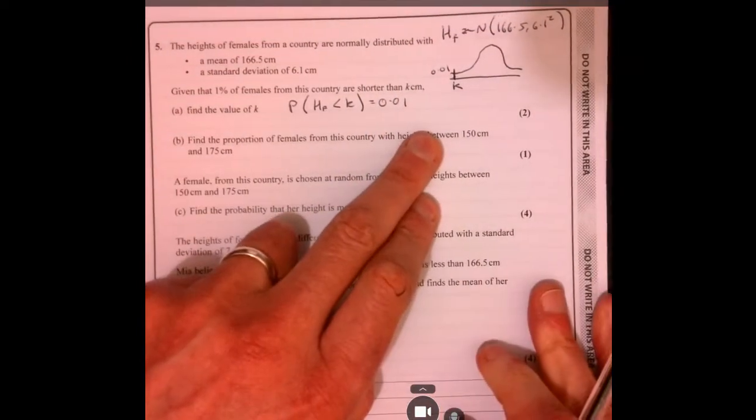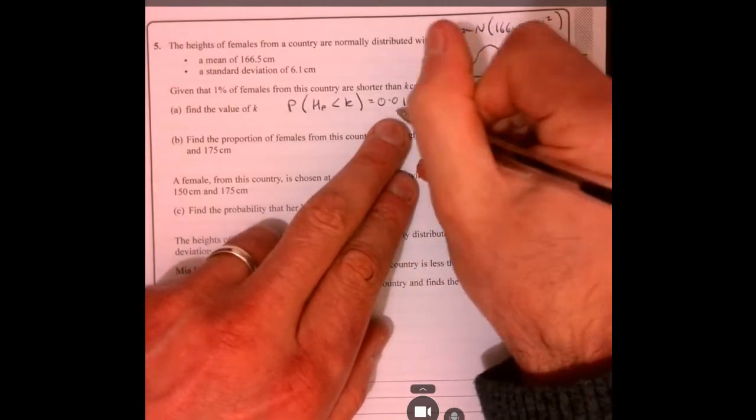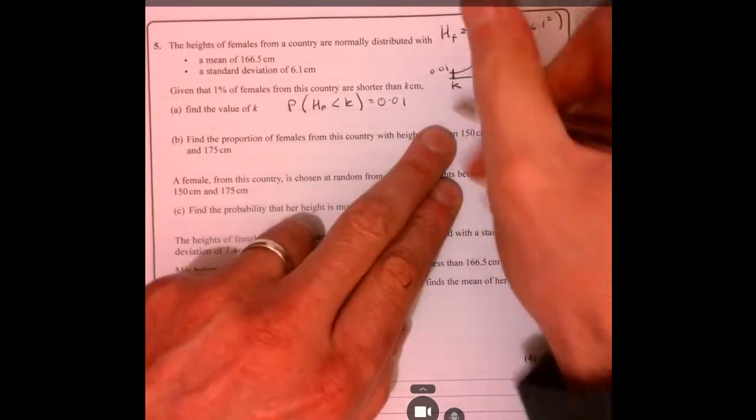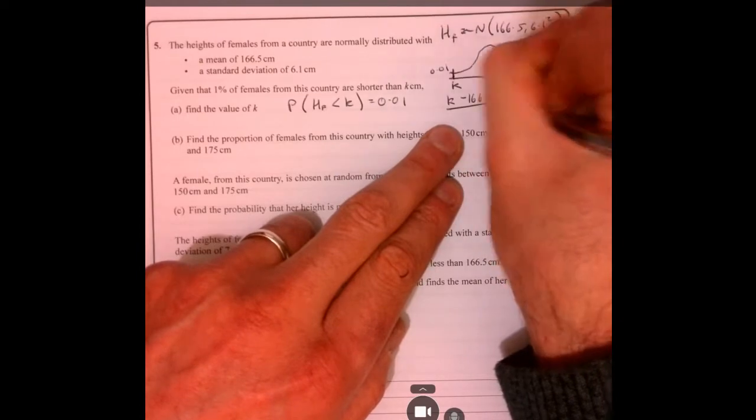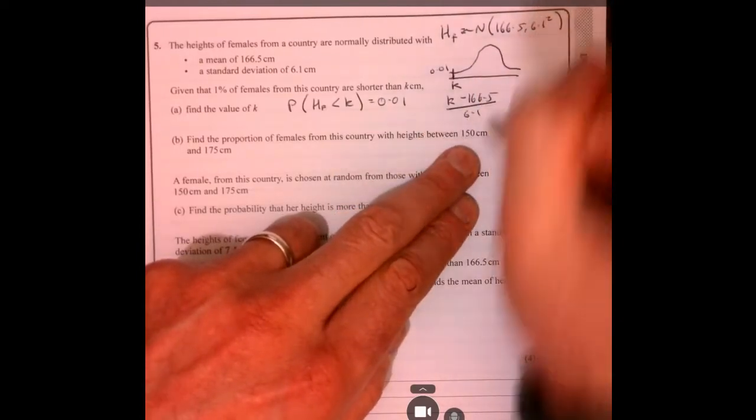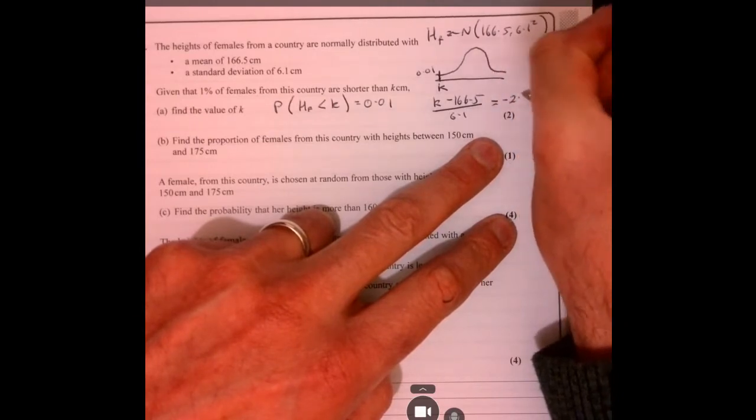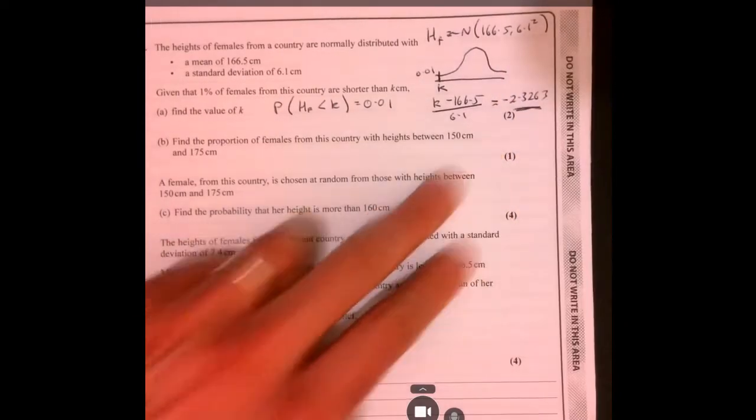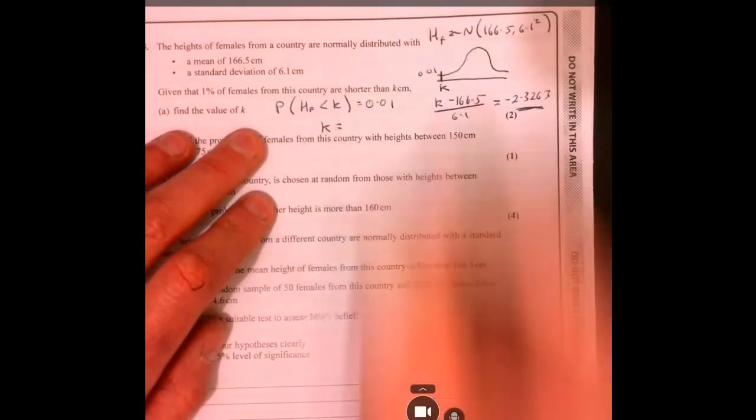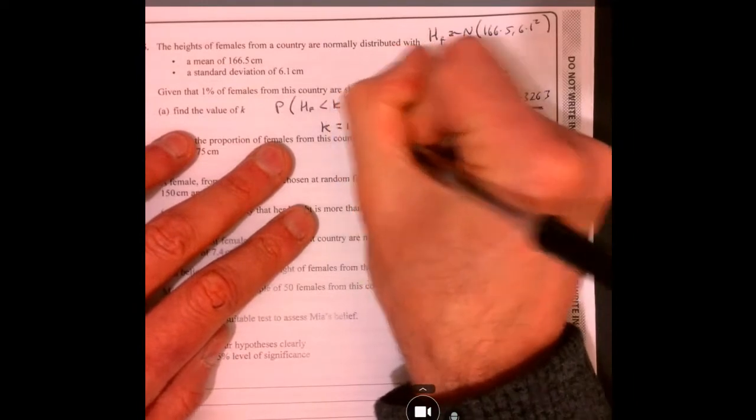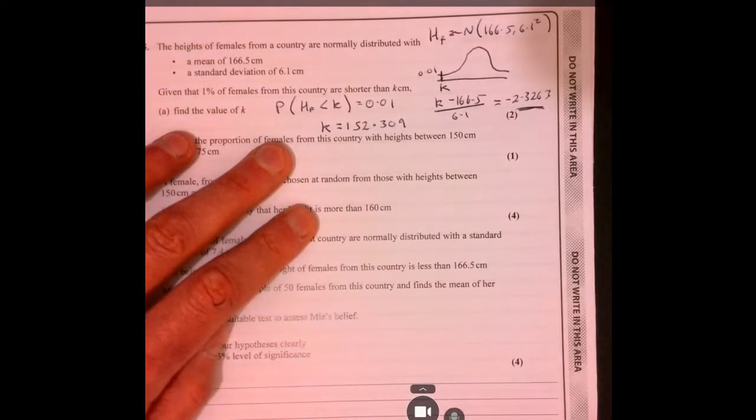We need to work out how many standard deviations we're above or below. You can use your calculator to do this, doing it as an inverse. If you want to do it the old-fashioned way, work out how many standard deviations you're above below the mean. That's equal to minus 2.3263, and if you look that value up in your tables, it's going to give us k equals 152.309.